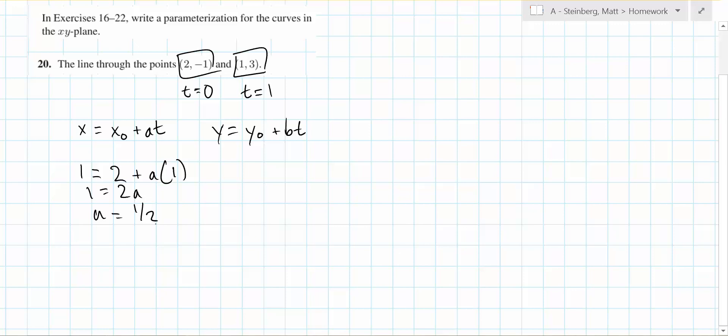And now y at t equals 1 is equal to 3. So 3 equals y₀, which is -1 plus b times 1. So 3 equals b minus 1, b equals 4.